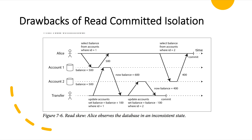If Alice reads the balance of account one again at the end of the transaction she would see a different value — 600 — than she saw in her previous query. Read skew is considered acceptable under read committed isolation because the account balances that Alice saw were indeed committed at the time when she read them.